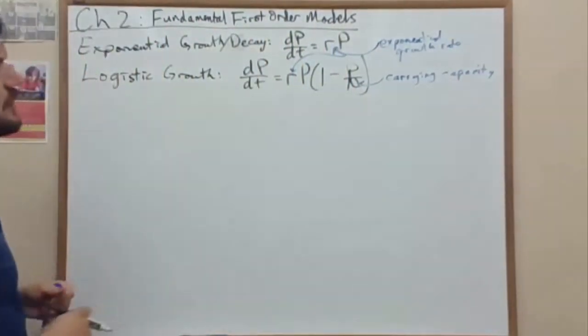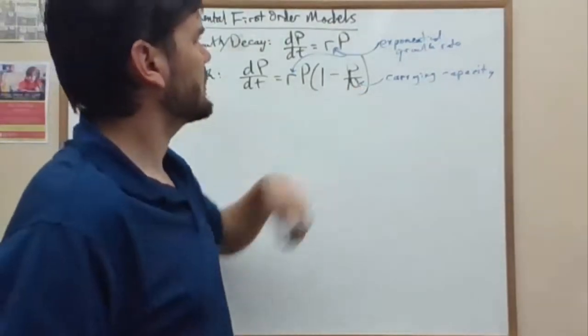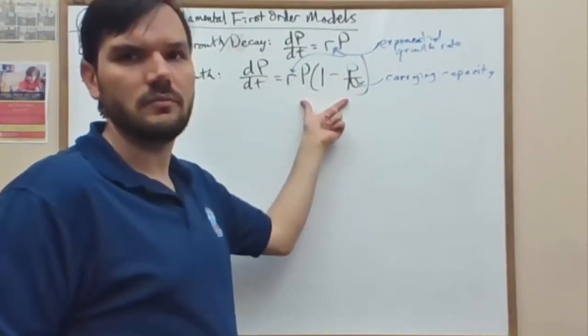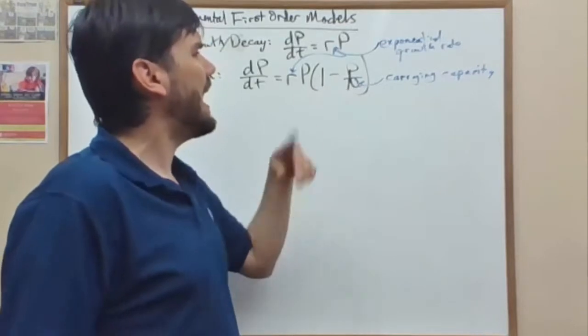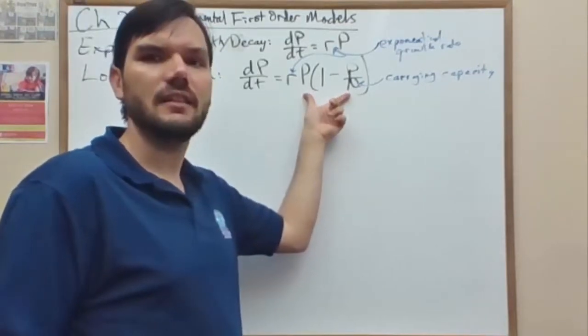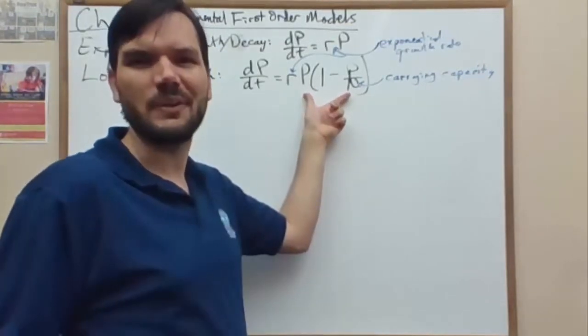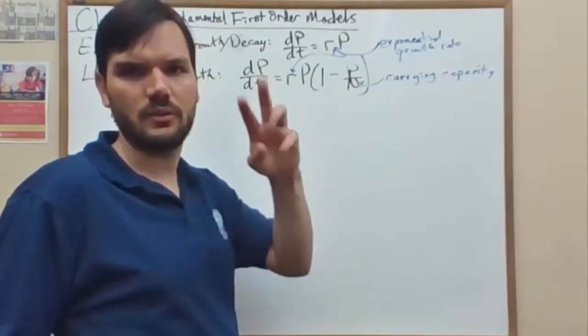So that's our logistic growth model. It is non-linear because of the extra term, but it is separable. See the video on solving that. And it actually is an almost linear or Bernoulli model. So it can be solved in one of those two different levels.